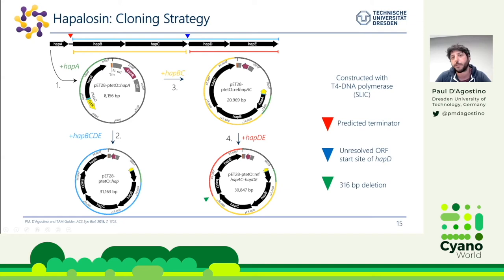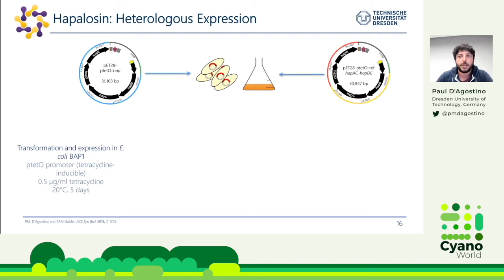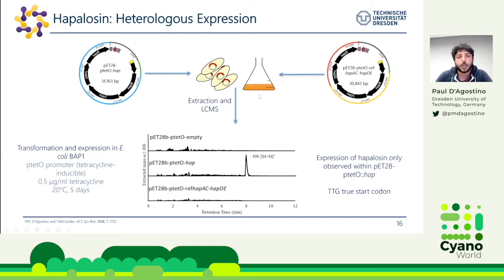These two expression vectors were identical except for the starting region of HapD. We transformed them into E. coli BAP1, induced with 0.5 µg/ml tetracycline for 5 days at 20°C, extracted, and tested by LC-MS. With the empty vector control we saw no hapilosin. With the full-length HapD expression vector we were able to identify hapilosin, while the shorter ATG vector produced no product. From this, we know that the larger open reading frame with the TTG start codon is essential for biosynthesis and must be the real start codon.